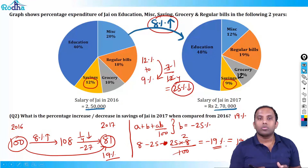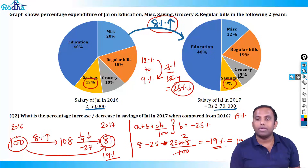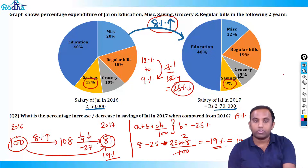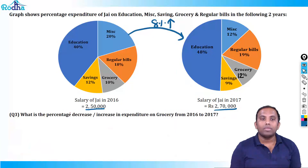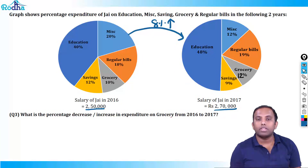Quite an easy one. Let's complete this set. Move to the next question. Question 3: what is the percentage decrease or increase in expenditure on grocery from 2016 to 2017?